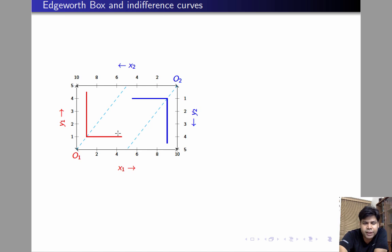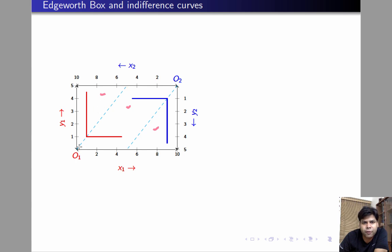The way the entire Edgeworth box looks, we can divide this problem into three regions: this region, this region, and this region. This is the region lying between the two 45-degree lines, this is the region lying above the 45-degree line through the origin of individual 1, and this is the region lying below the 45-degree line through individual 2's origin.